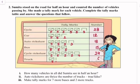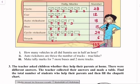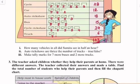So now we will answer the questions. How many vehicles in all did Sumita see in half an hour? The total number of vehicles Sumita saw in half an hour is 103 vehicles.